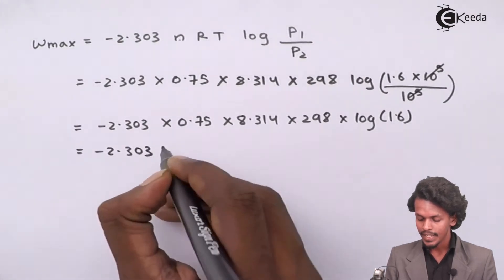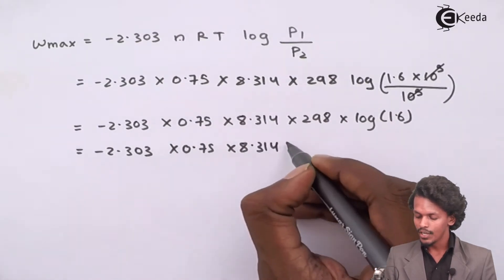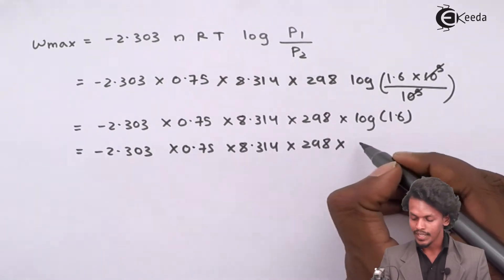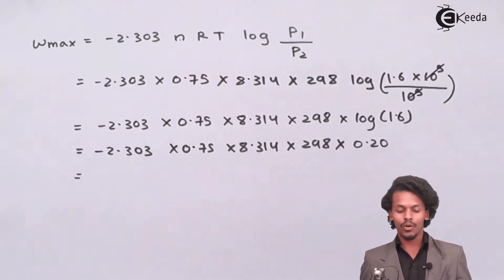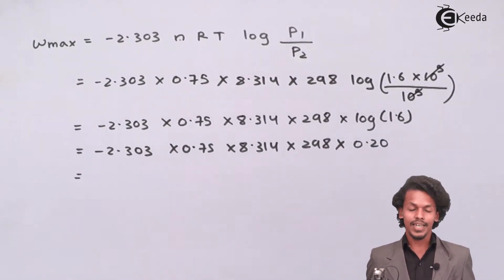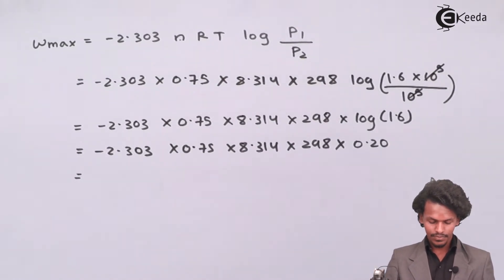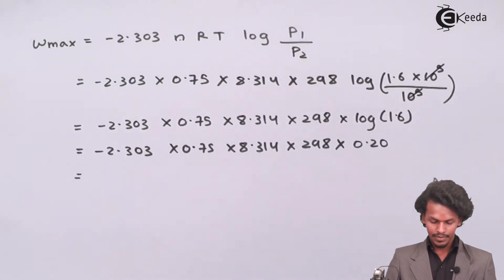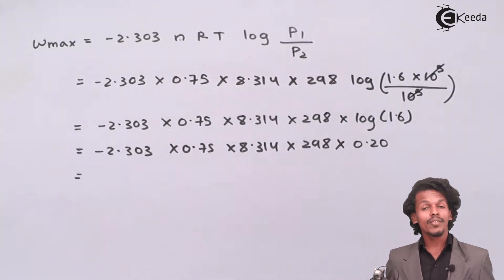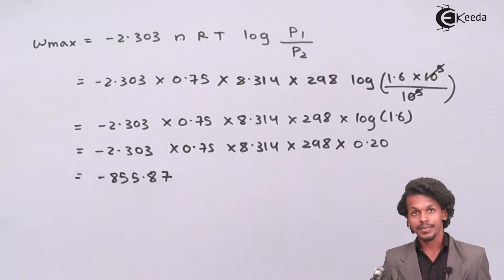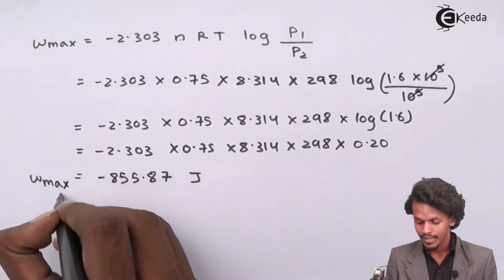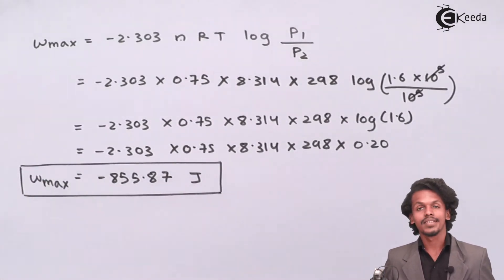So the expression becomes: Wmax = −2.303 × 0.75 × 8.314 × 298 × 0.20. Now applying the calculation, we get the value of Wmax as −855.87 joules. This is the final answer.